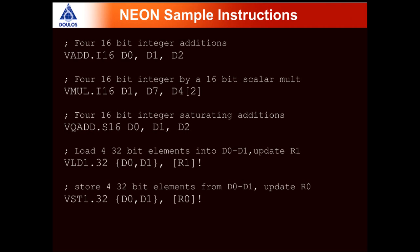The second example is a multiplication where the elements are 16-bit integer values. In this case, we take the third element of d4 and multiply it to all elements of d7, storing the results inside d1. The third example is vqadd, where q indicates a saturating operation and s16 indicates signed 16-bit values — so we are doing four 16-bit integer saturating additions.